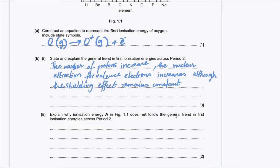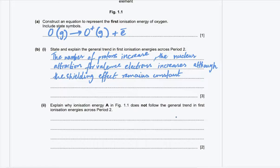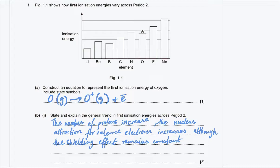Part B2: explain why ionization energy A in figure 1.1 does not follow the general trend. Although ionization energy increases across a period, this is not the case for elements in group 6, which have a paired electron in their outermost P orbital. A paired electron means less external energy is required to remove it. Due to spin-paired repulsion in the P orbital, which is stronger than increased nuclear charge, ionization energy A does not follow the general trend.